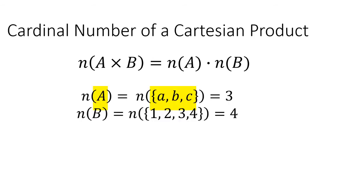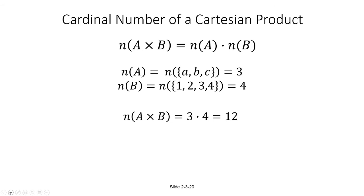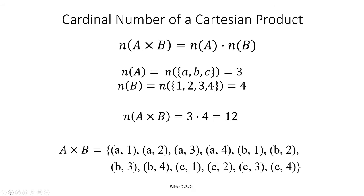The number of elements in A cross B is the number of elements in A times the number of elements in B. For example, if set A contained A, B, and C, and set B contained 1, 2, 3, and 4, then the number of elements in A is 3 and the number of elements in B is 4. Instead of actually constructing the Cartesian product and counting, we could just use this formula — the number of elements in A cross B is going to be 3 times 4, which is 12.